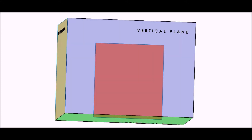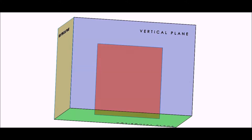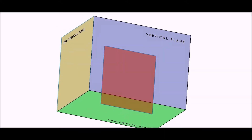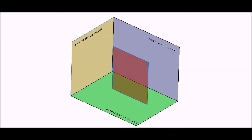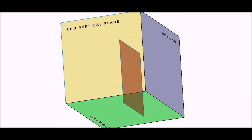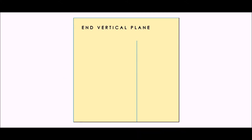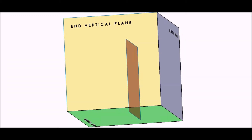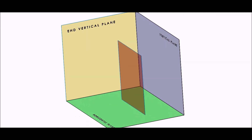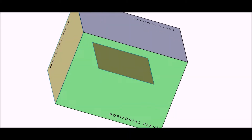Here we see a SOLIDWORKS model of a vertical plane in the views of elevation, end view, and plan. The vertical plane in the SOLIDWORKS model is parallel to the vertical plane of reference and only cuts the horizontal plane.